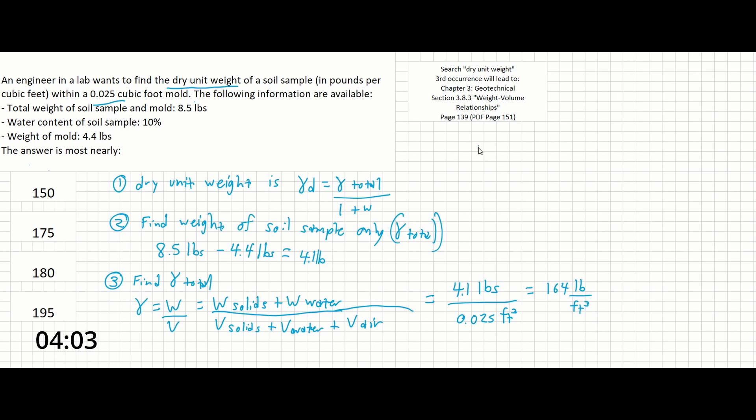From here, we can use the equation for the dry unit weight that we found in the reference manual to find gamma d.